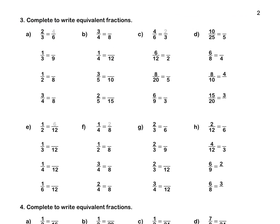For B, we times by 2 at the bottom, so we times by 2 at the top, and the answer is 6 eighths. For C, we divide by 2 at the bottom, so we divide by 2 at the top, and the answer is 2 thirds. For D, we divide by 5 at the bottom, so we divide by 5 at the top, and the answer is 2.